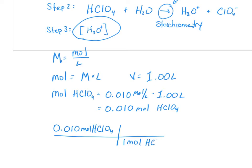And so based on the reaction, we know that there's 1 mole of HClO4. When it reacts, it forms 1 mole of H3O+. So from this reaction, we get 0.010 moles of hydronium ion.